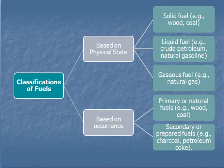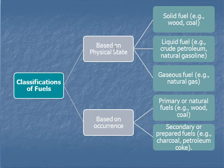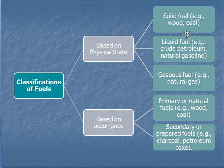Now we come to classification of fuels. Fuels can be classified in two ways. First, based on physical state — whether the fuel is solid, liquid, or gaseous. Examples: solid fuels include wood and coal; liquid fuels include different petroleum products; and gaseous fuels include natural gas and LPG.